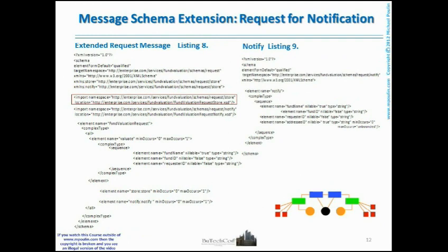The request message schema has to include a new business notification action represented by the new element Notify, as shown in listing 8. Action Notify is defined in listing 9. It contains an AddresseeID element which stands for an identifier of the addressee to be notified. If it's not specified, notification is omitted. If its value is null, the notification may go to everybody as a broadcast. Otherwise, the notification has to go to the specified unlimited list of addressees as a multicast.